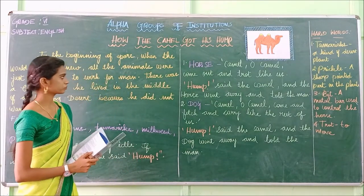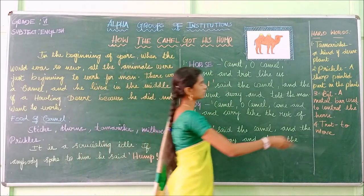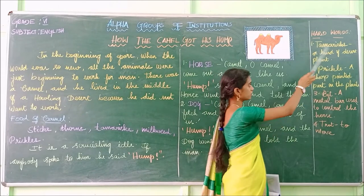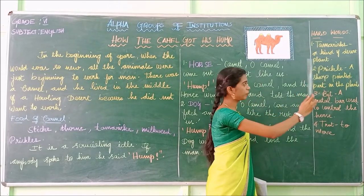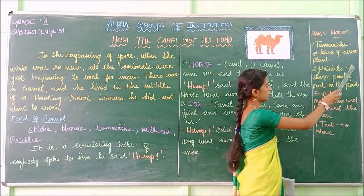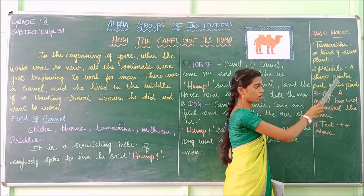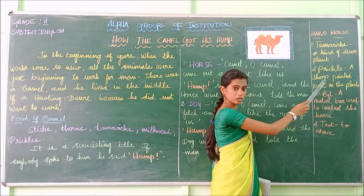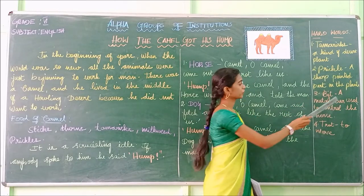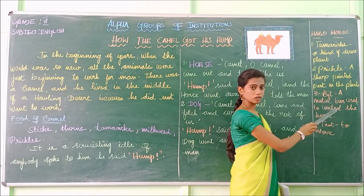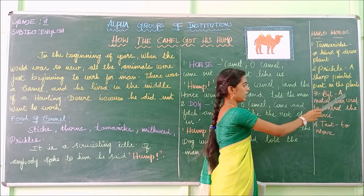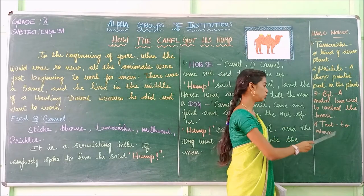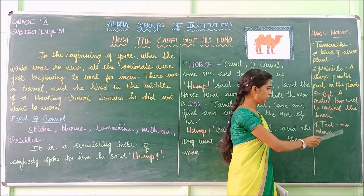Shall we read the hard words? Tamarisk — a kind of desert plant. Prickle — a short pointed part on the plants. Bit — a metal bar used to control the horse. Trot — to move.